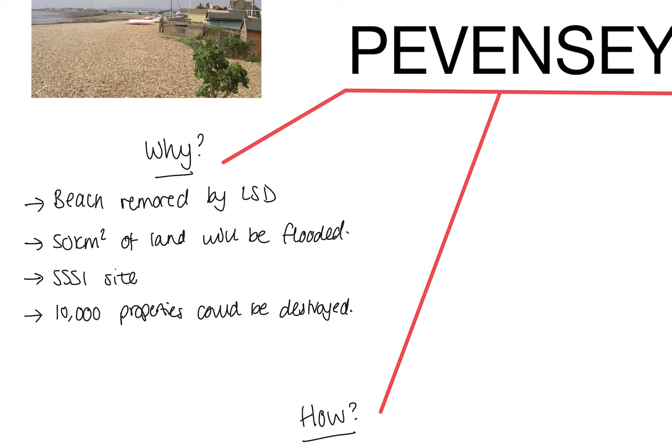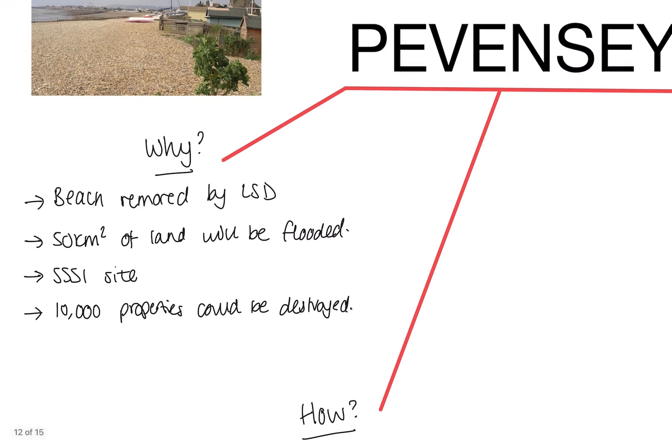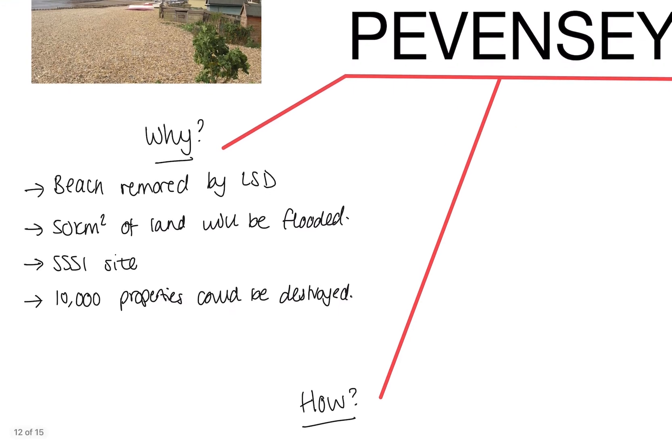If we think about how this might impact people, it's likely that 10,000 properties could be destroyed if the land is flooded, and this area is particularly popular with caravan tourism. So if we were doing nothing here, it could well threaten incomes for local people.